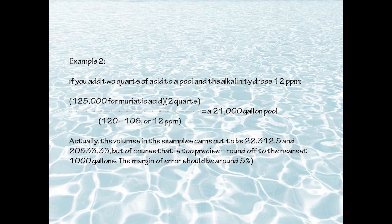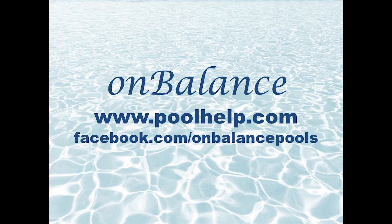The actual volumes in these two examples came out to 22,312.5 and 20,833 — but of course that's too precise for pool use, so we round off to the nearest 1,000 gallons. The margin of error should be around 5%. This method has been useful for finding the volume of oddly shaped pools and avoids having to do the geometric formulas.